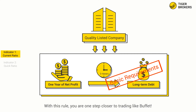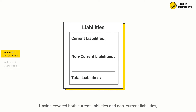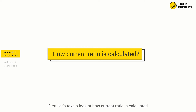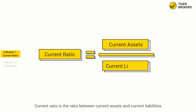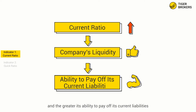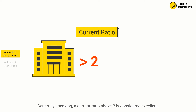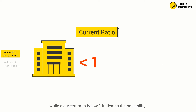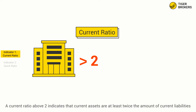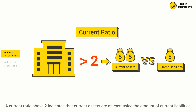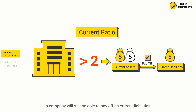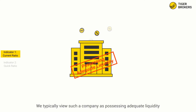With this rule, you are one step closer to trading like Buffett. Having covered both current liabilities and non-current liabilities, we can now calculate the current ratio and quick ratio. The current ratio is the ratio between current assets and current liabilities. The higher the current ratio, the higher a company's liquidity and the greater its ability to pay off its current liabilities. Generally speaking, a current ratio above 2 is considered excellent, while a current ratio below 1 indicates the possibility that a company may run into a short-term liquidity squeeze. A current ratio above 2 indicates that current assets are at least twice the amount of current liabilities — even if half of the current assets cannot be quickly converted into cash, a company will still be able to pay off its current liabilities. We view such a company as possessing adequate liquidity.